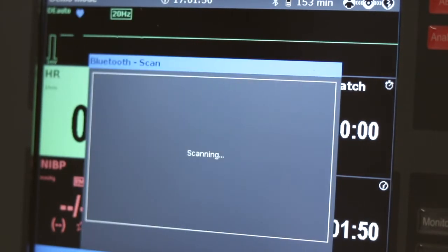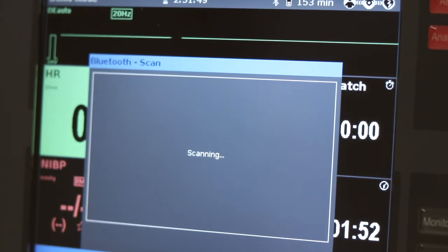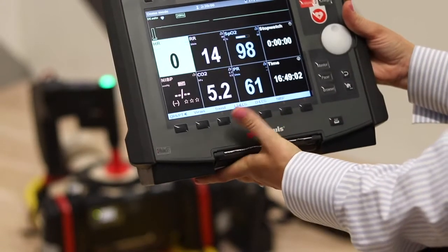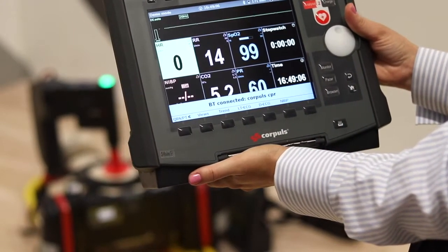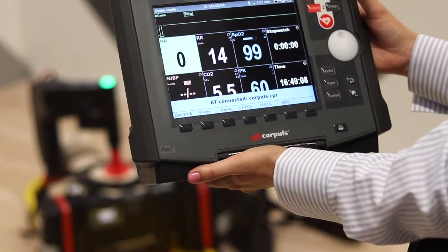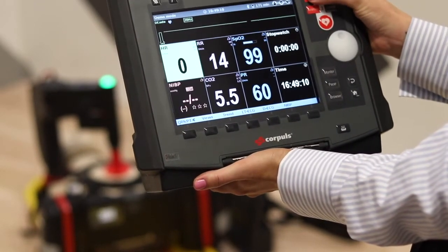Thanks to the Bluetooth connection, the CorePulse CPR is effectively the fourth module of the C3. The team is supported by the remote control of the CorePulse CPR via the C3, and treatment can be safer and the hands-off time reduced, increasing the patient's chance of survival.